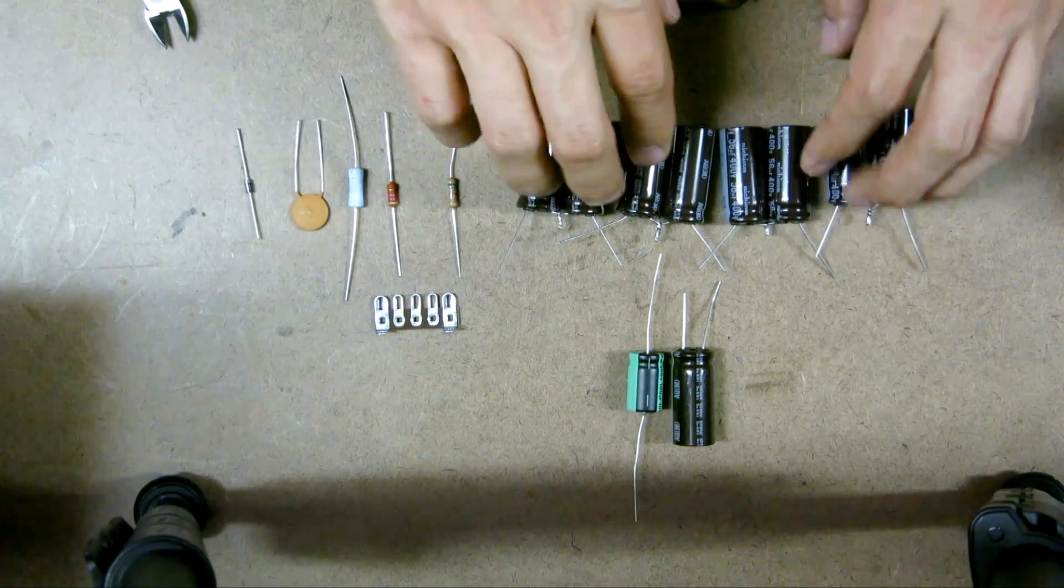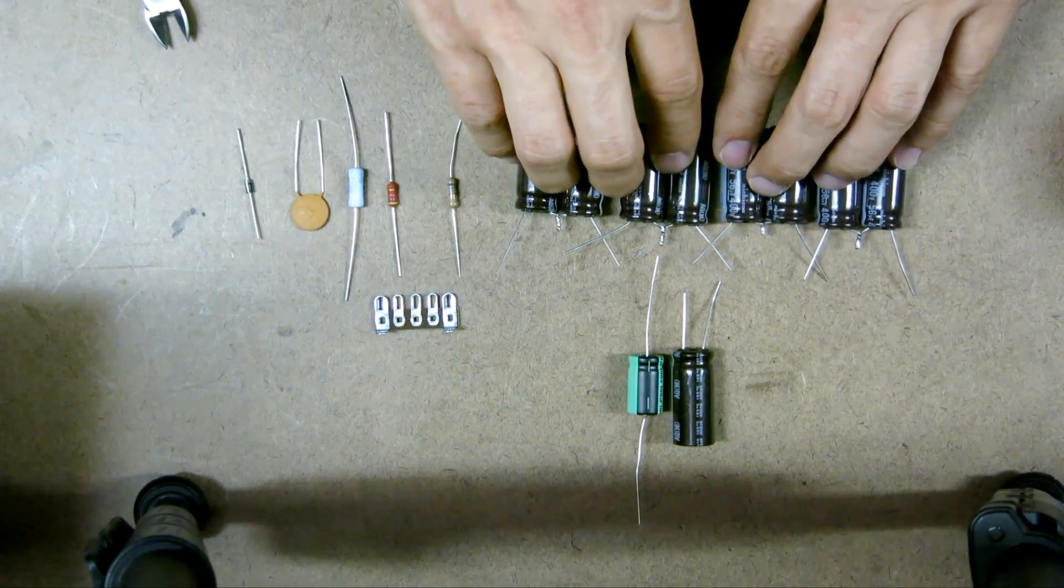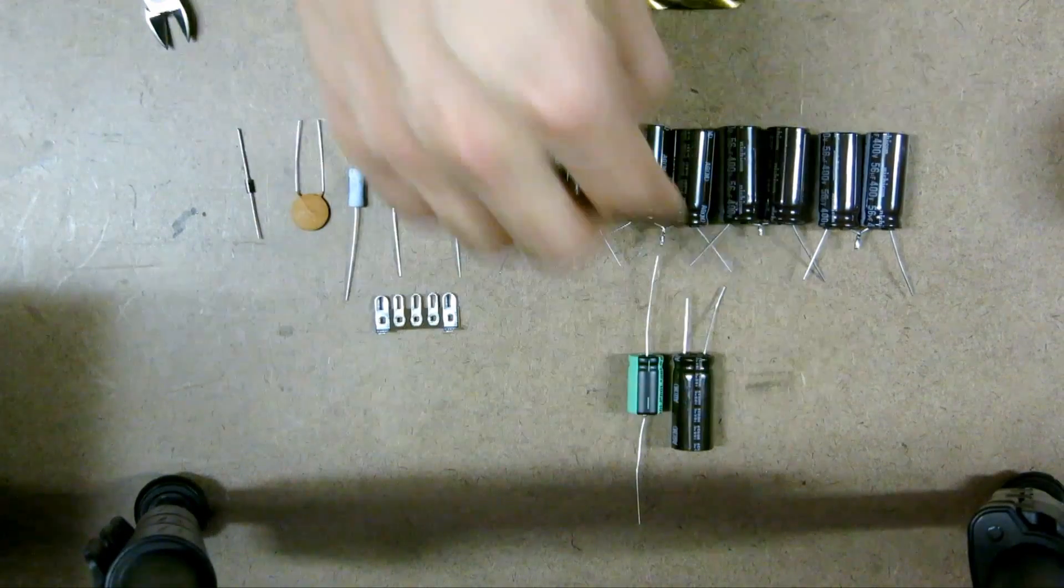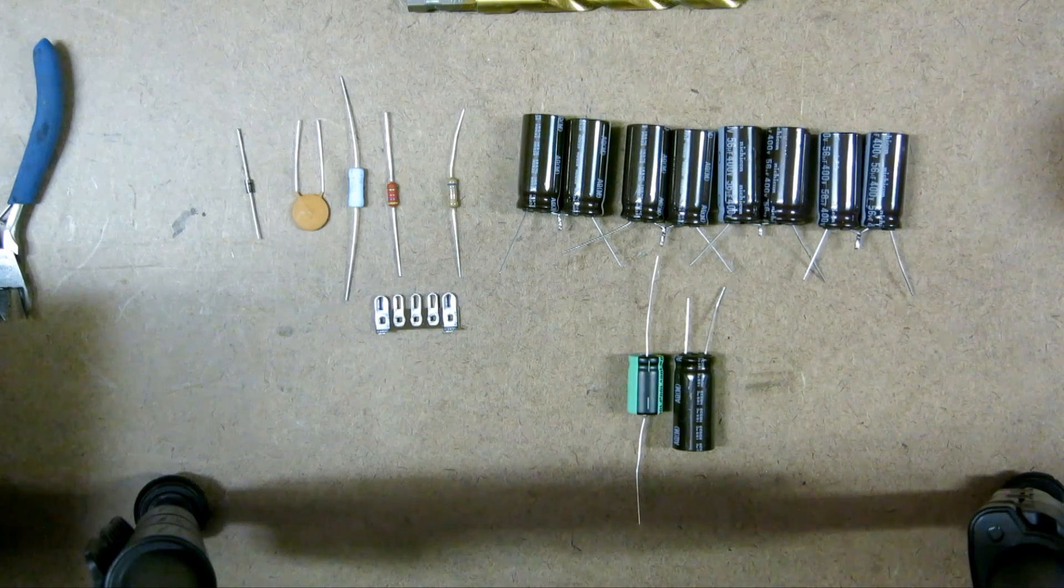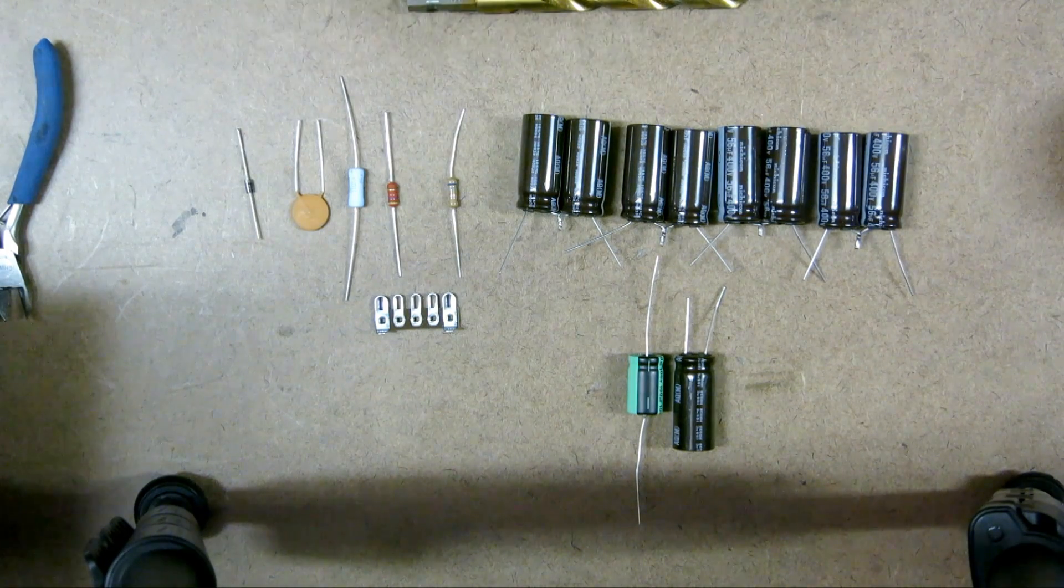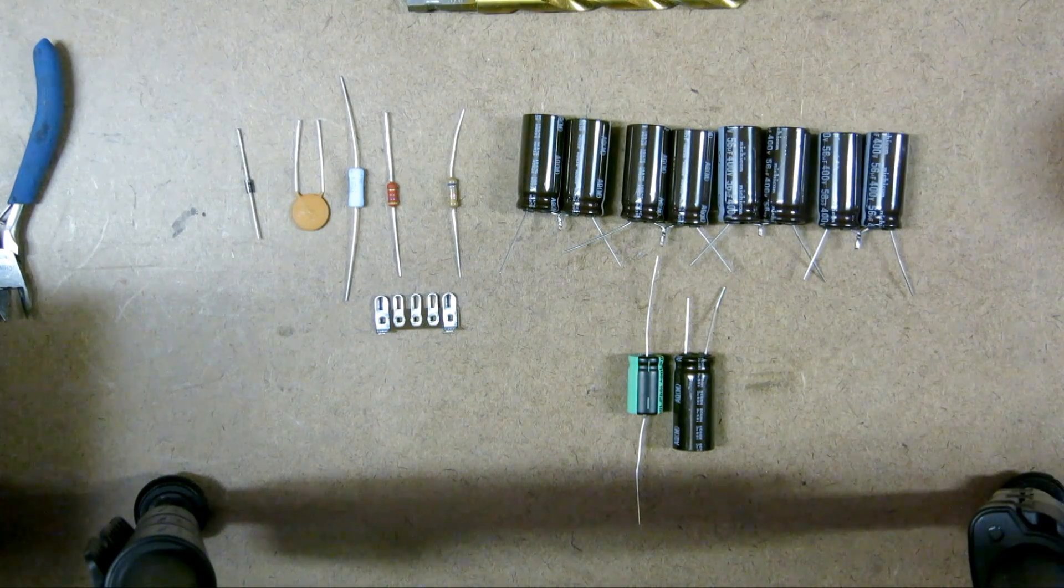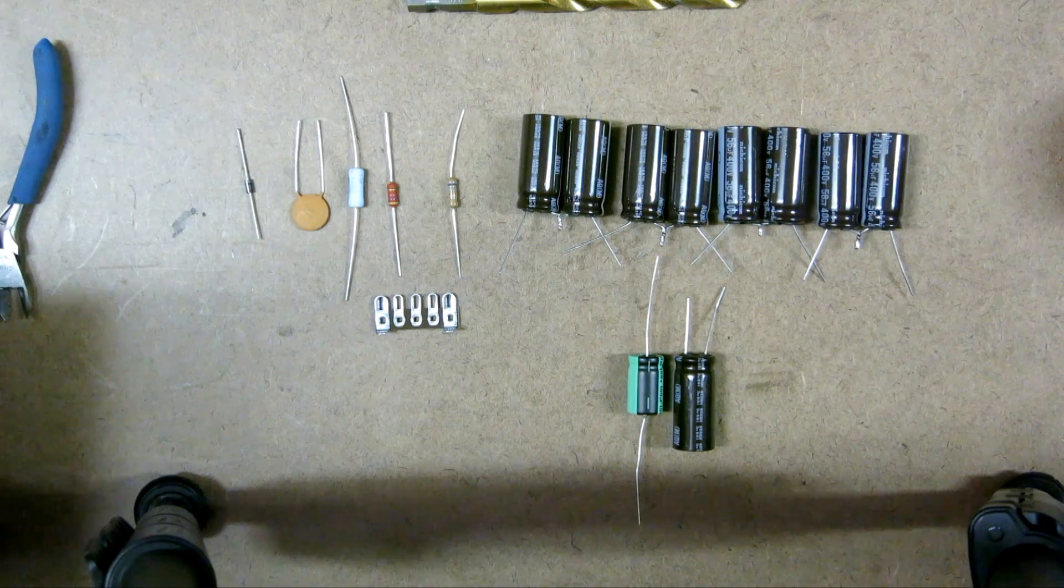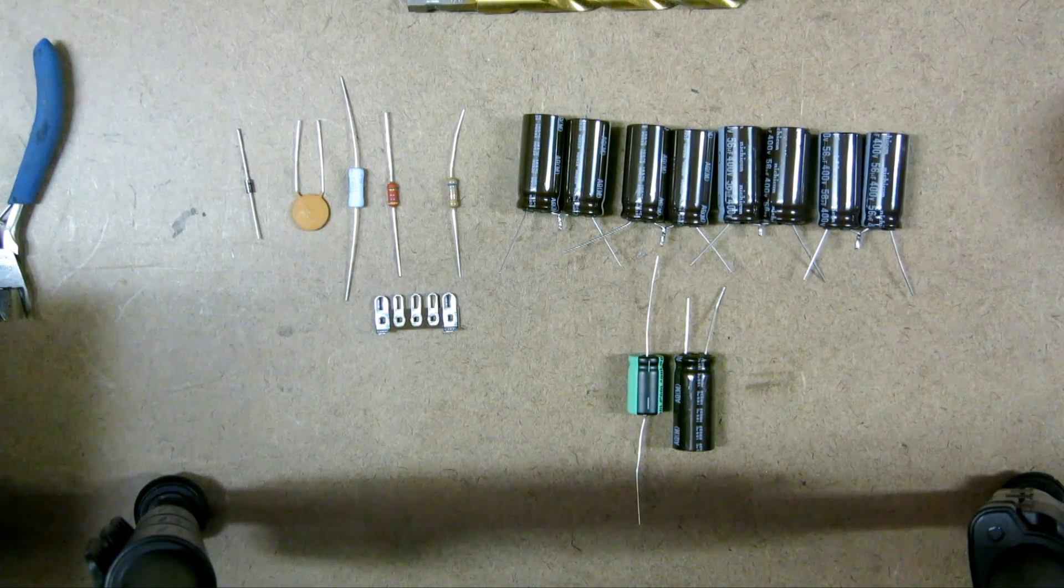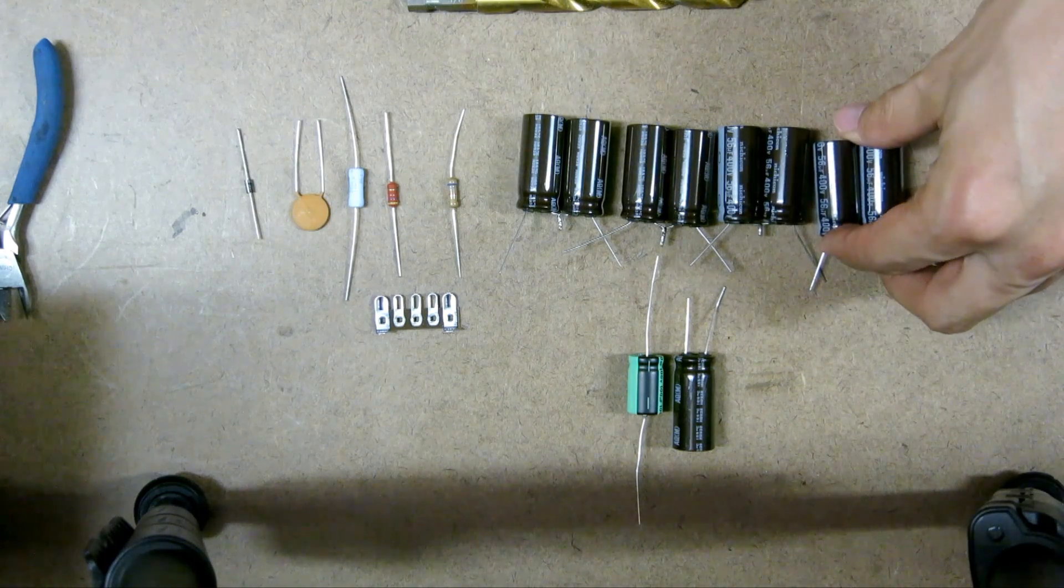So since I need four caps for that, that's these four. And then these two right here are the other two 15 microfarads. Now the rule of thumb is this, is that you always can go up on voltage and you always can go up on capacitance for the power caps. Now you can't go up capacitance on the audio caps, but for these power filter caps it's no problem going up in capacitance.